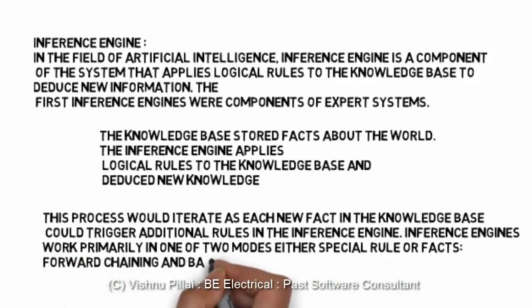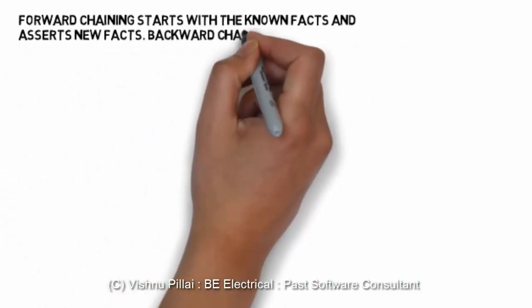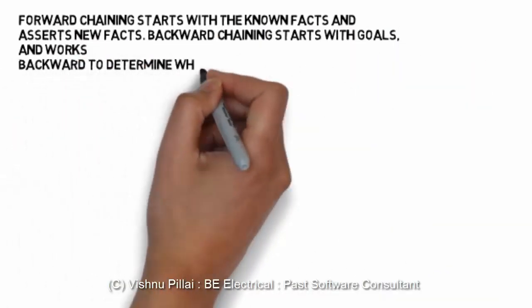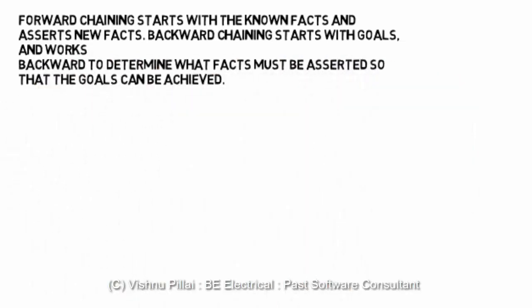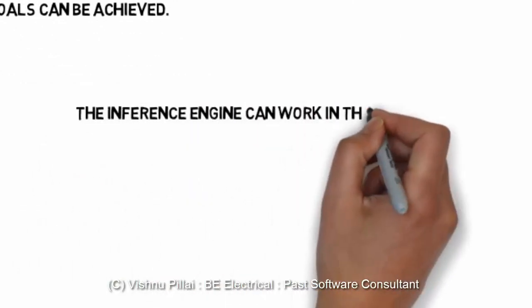The inference engine operates primarily in one of two modes using specified rules or facts. Forward chaining and backward chaining are the two reasoning methods used to work with knowledge in the knowledge base. New knowledge derived during this process can also be stored back in the knowledge base, making future problem solving quicker and faster. Forward chaining starts with known facts and asserts new facts. Backward chaining starts with the goals and works backward to determine what facts must be asserted so that the goal can be achieved.